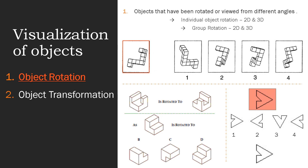Let's see what object rotation is. It is where the entire object is mentally rotated by turning it in 3D space. We have 2D or 3D objects to rotate, and we also have individual object rotation or group object rotation.